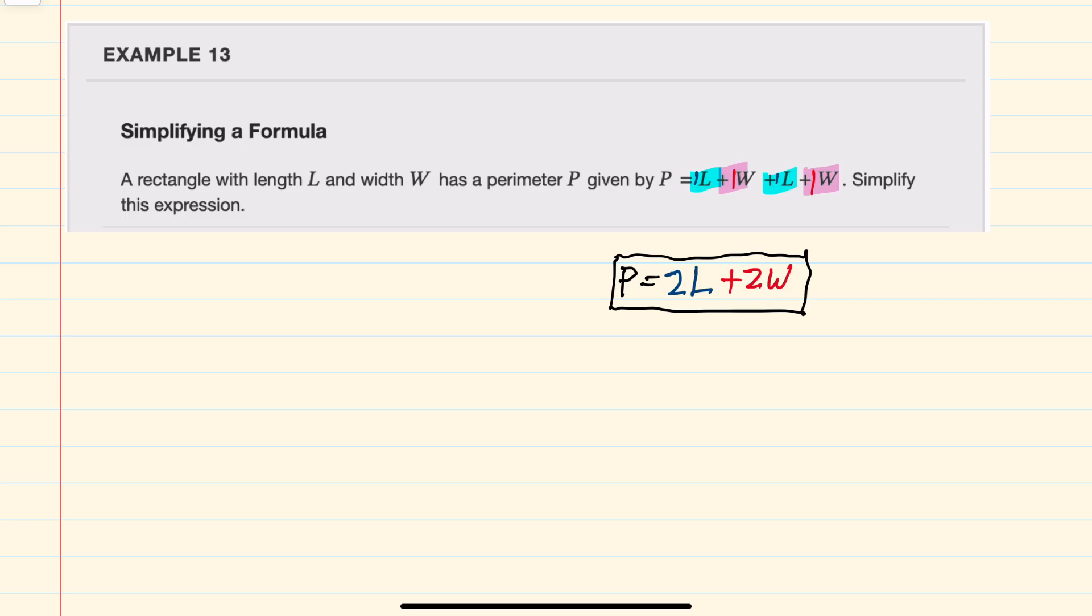So our perimeter formula would simplify to 2L plus 2W. Thank you.